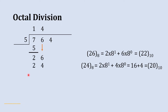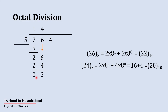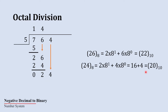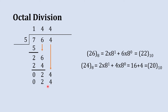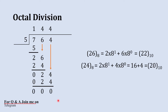Now we write 24 and subtract it from 26: 4 minus 2 is 2, and 2 minus 2 is 0. We bring down 4, getting 24. The decimal equivalent is 20, so 5 fours are 24 in octal. 24 minus 24 gives us 0. This was simple, and you got the basic concept.